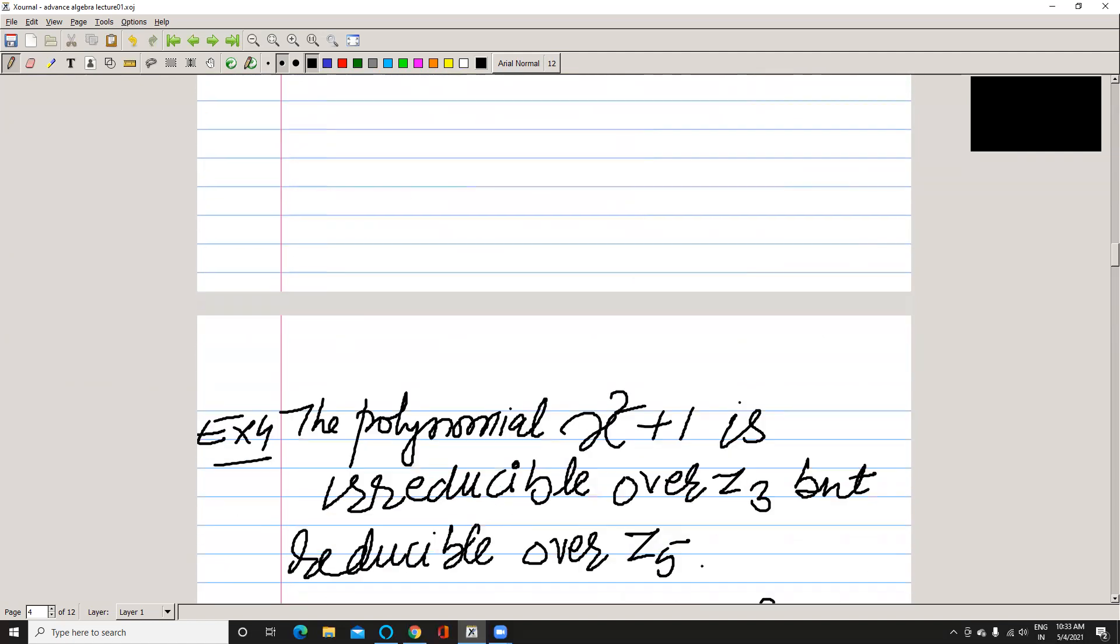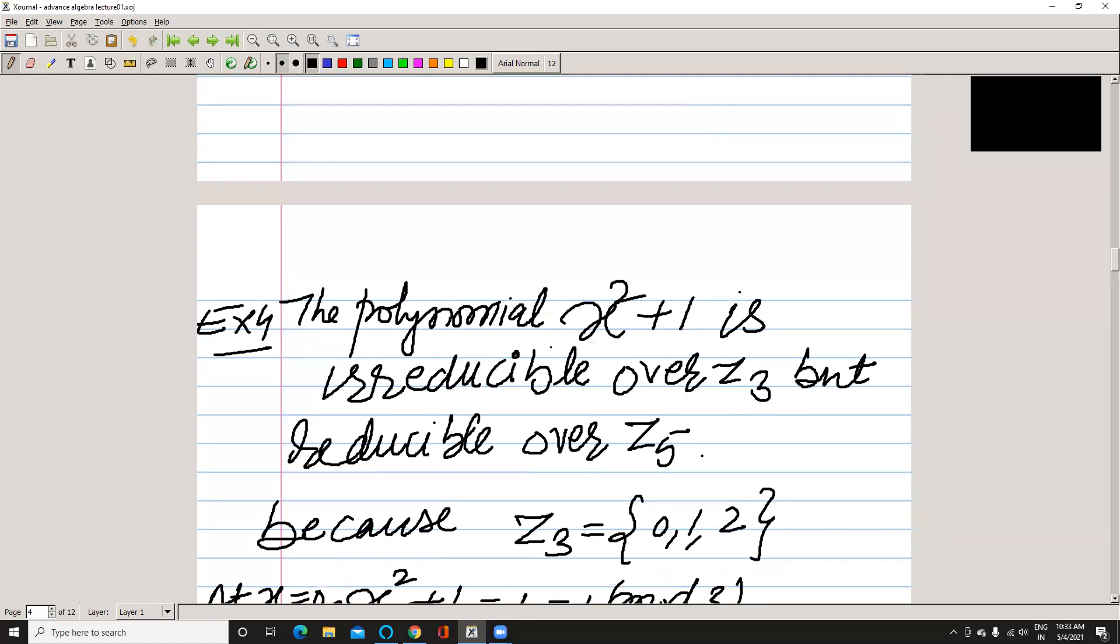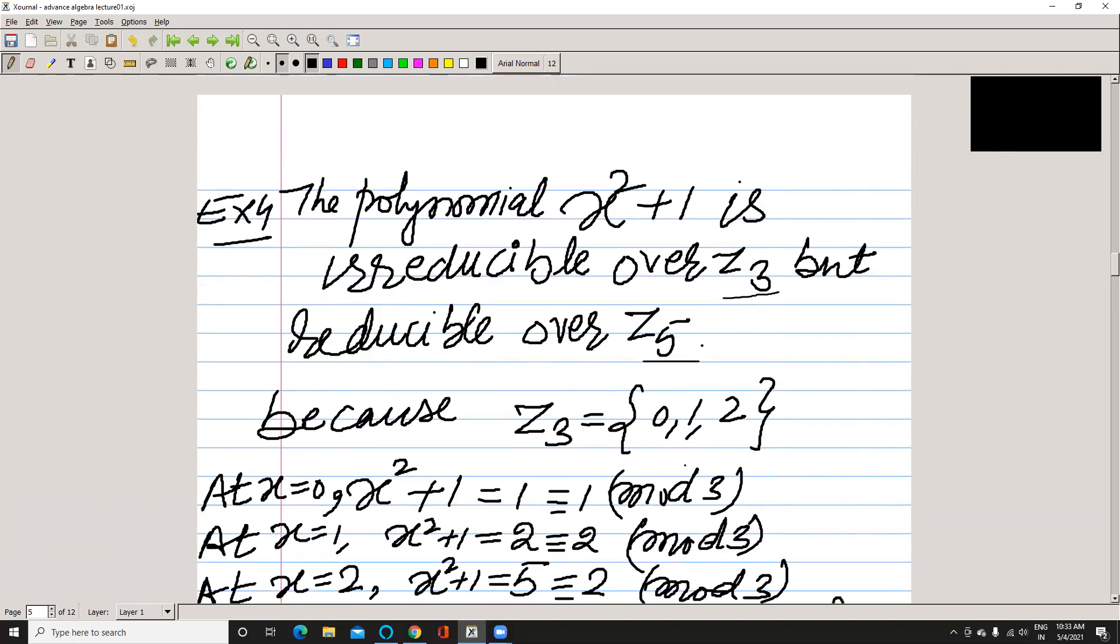Take one more example. The polynomial x² + 1 is irreducible over Z₃ but reducible over Z₅. You see how it is irreducible. We know Z₃ has three elements: 0, 1, 2.